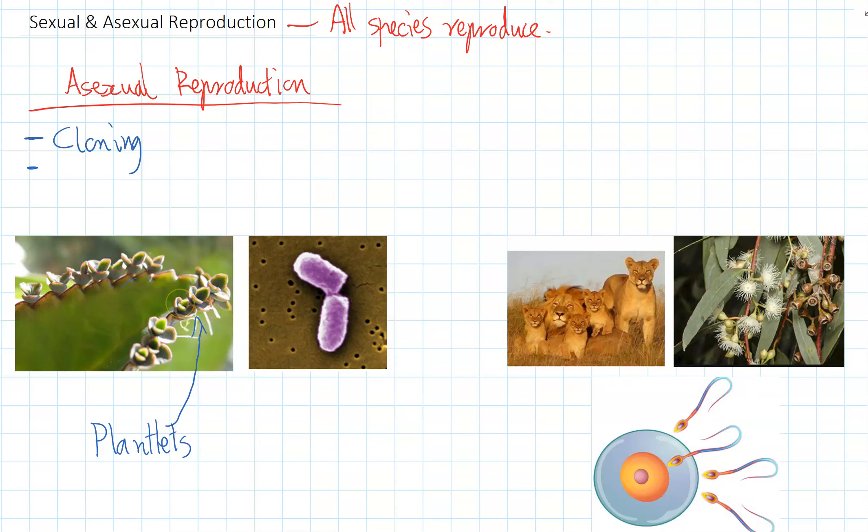And these plants are about to drop off the leaf. They'll fall onto the ground and they'll start to grow into new plants, which will be an exact copy or a clone of that individual.